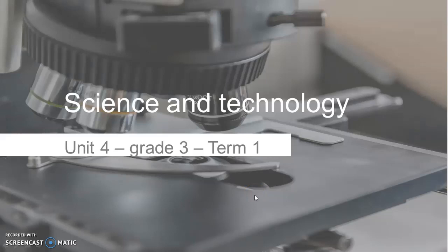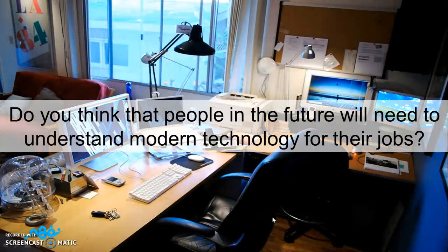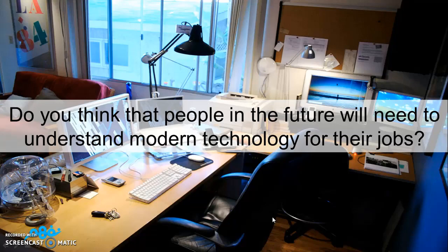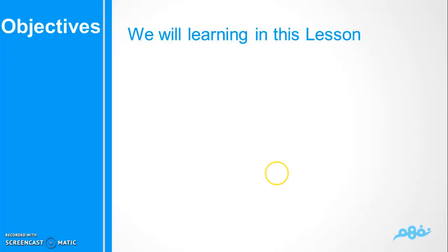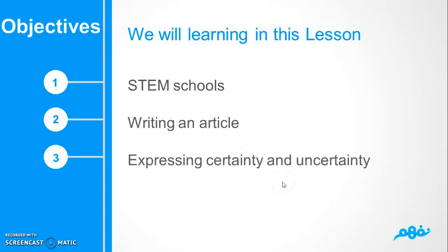Hello everyone, now we have a tour in our unit that calls science and technology. But first, do you think that people in the future will need to understand modern technology for their jobs? Okay, that's all about our unit right now. So in this lesson, inshallah, we'll learn about STEM schools. Second, how to write an article, and third, expression certainty and uncertainty. So let's get started first with the reading board.